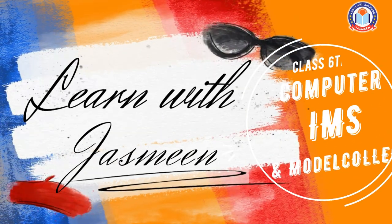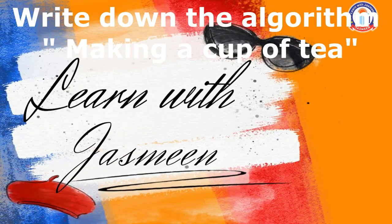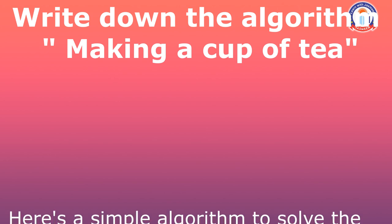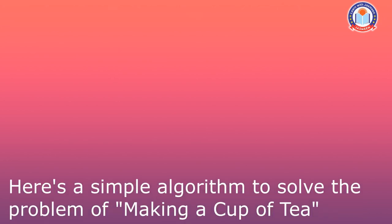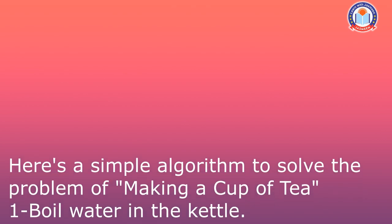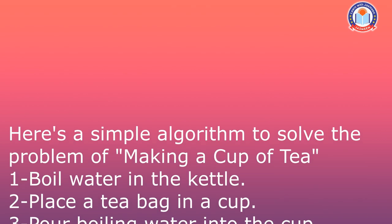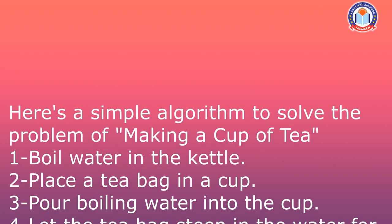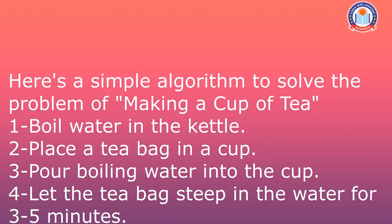Write down the algorithm for making a cup of tea. Here is a simple algorithm to solve the problem of making a cup of tea. Number one: boil water in the kettle. Number two: place a tea bag in a cup.